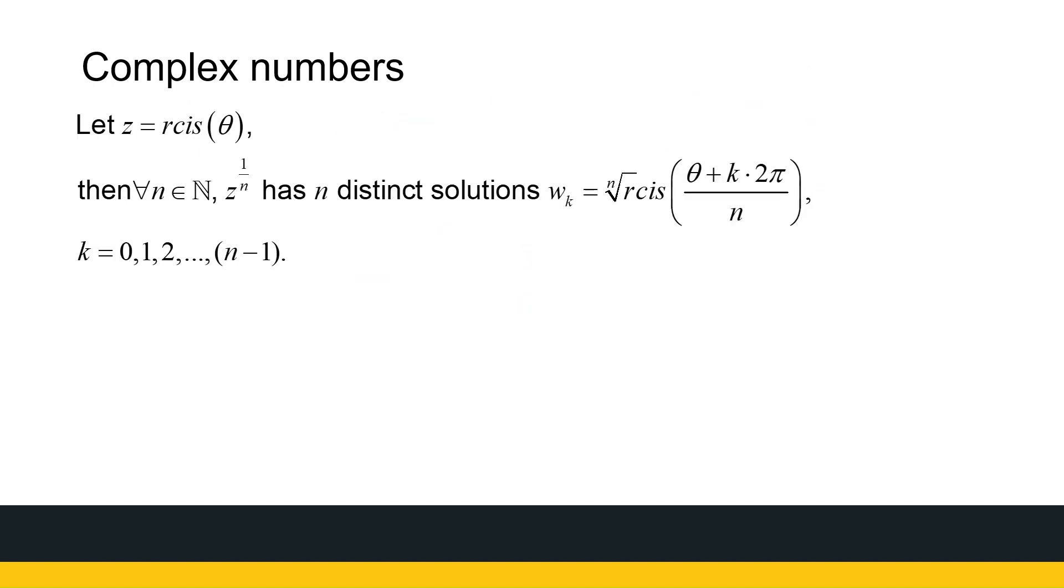So let's get started. Here's our formula that we're going to use. Our formula says that if z is in polar form, r cis theta, then z to the power 1 over n has n distinct solutions. My k values are from 0 to n minus 1. So let's look at a real example.